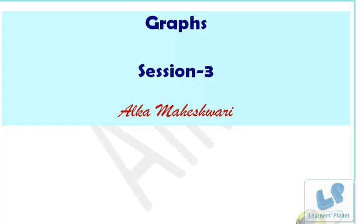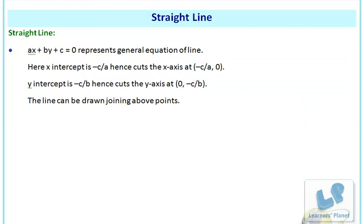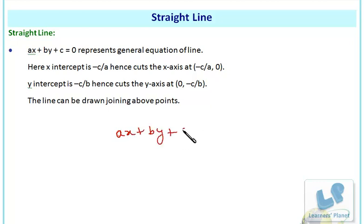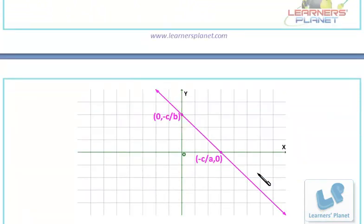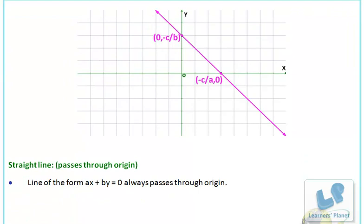Let's begin this session. The equation of a straight line, or a linear equation in two variables, represents the general equation of a line. Here X and Y are variables and since it's a linear equation it represents a line. The general form is ax plus by plus c is equal to 0.